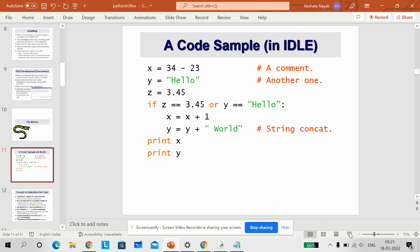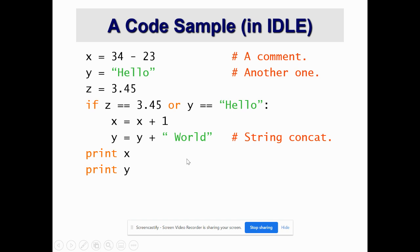Here you can see that I have three variables x, y and z. x is equal to 34 minus 23. So, the result after subtracting 23 from 34, whatever the value is there, that will be stored in x.